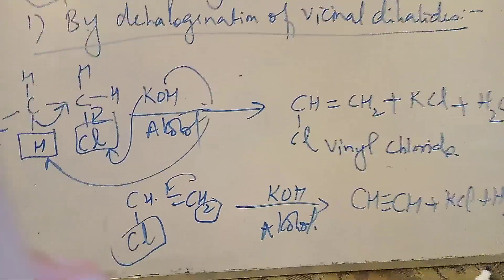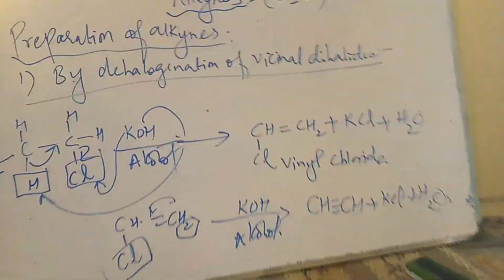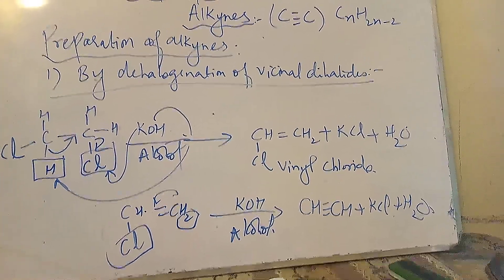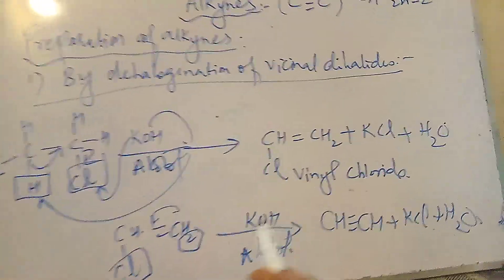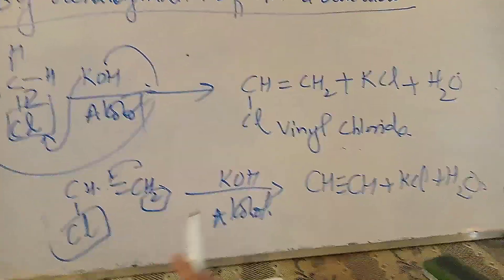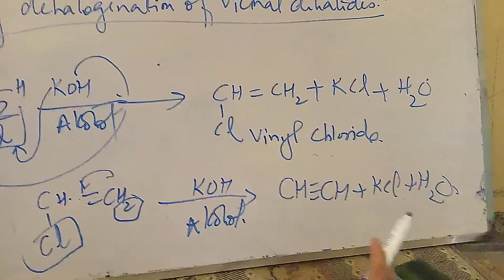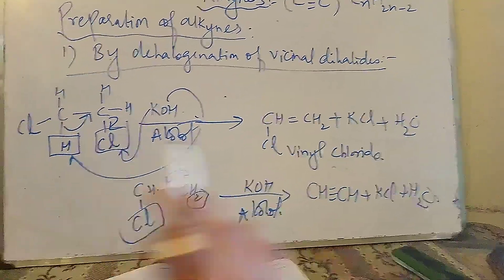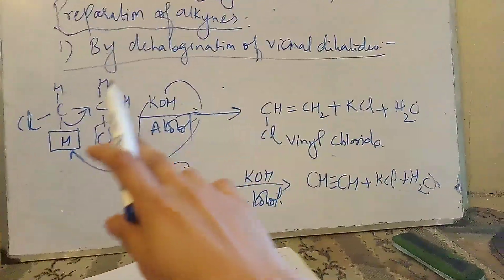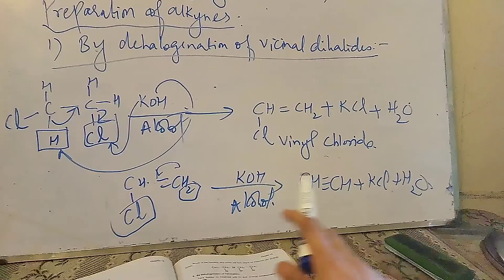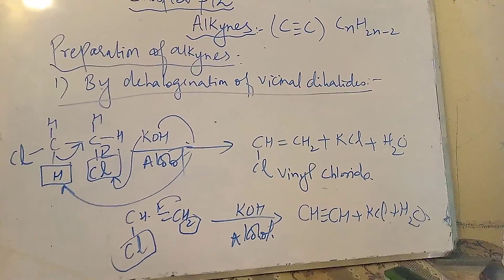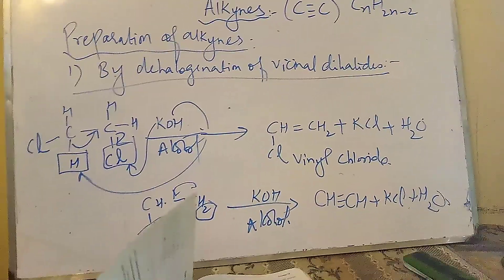Now the product will be ethyne (CH≡CH), plus KCl plus water. So this is called dehydrohalogenation of vicinal dihalides. It is carried out in two steps: in the first step, one hydrogen and one halogen are removed to form a double bond and vinyl chloride is obtained as a product. In the second step, dehydrohalogenation is performed again and one more hydrogen and halogen are removed, giving a carbon-to-carbon triple bond — ethyne — plus KCl plus water.